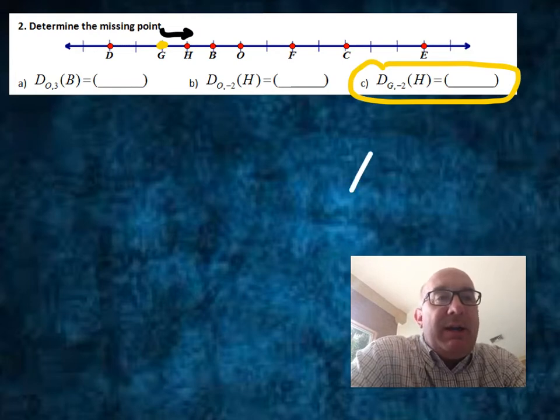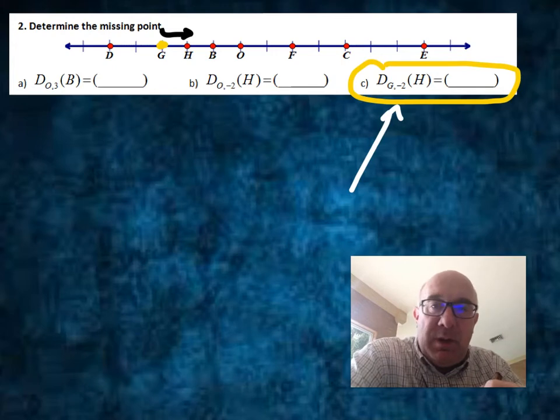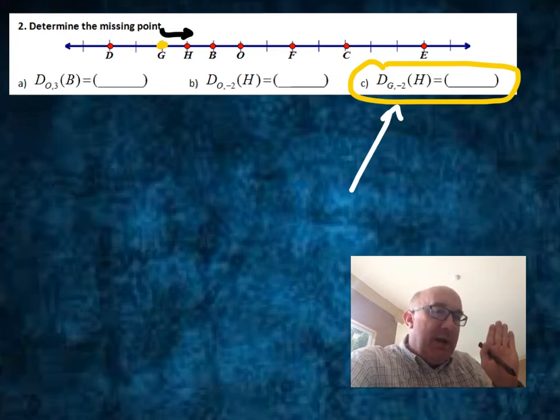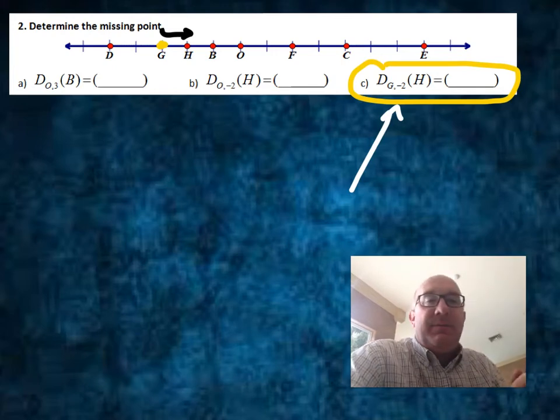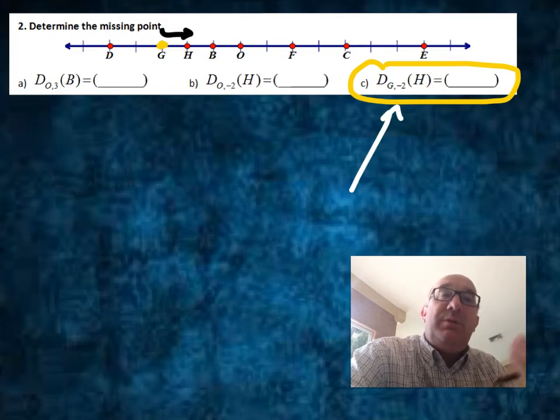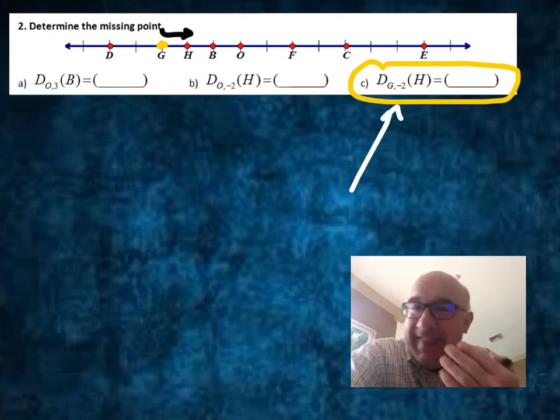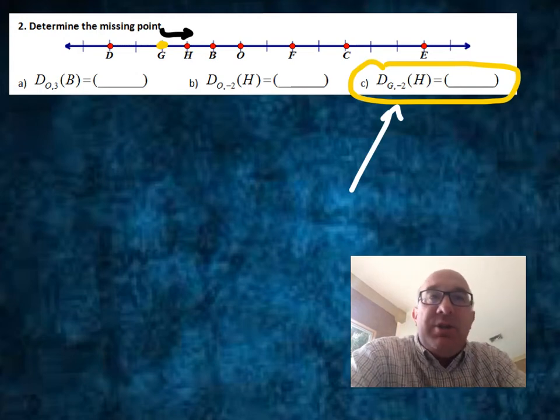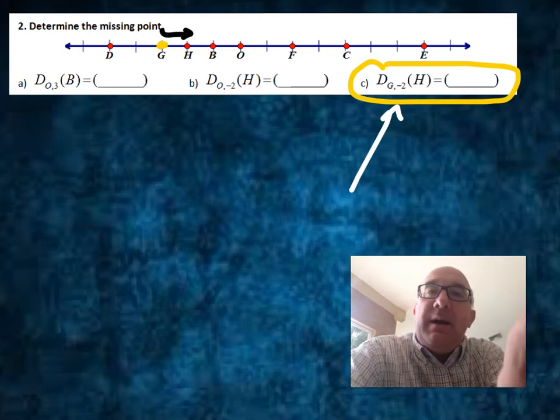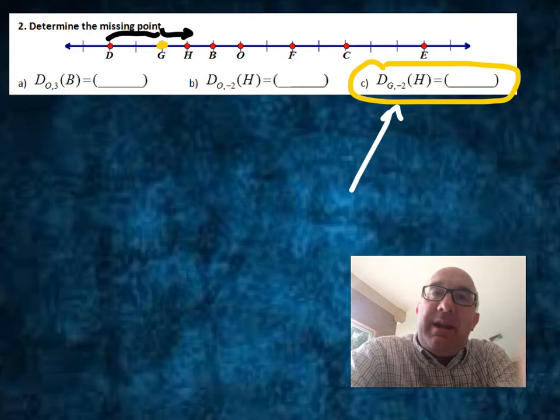You'll notice that the dilation is a negative 2. So think of it this way: H is 1 to the right, so negative 2 would be double that in the opposite direction, in the negative direction. So it will be a distance from here to here.